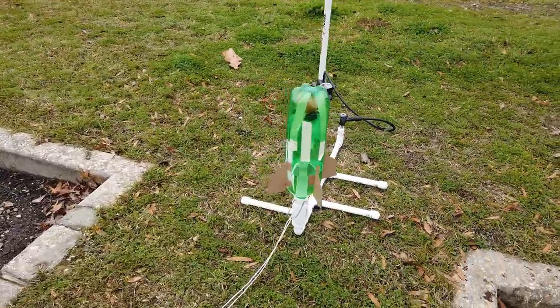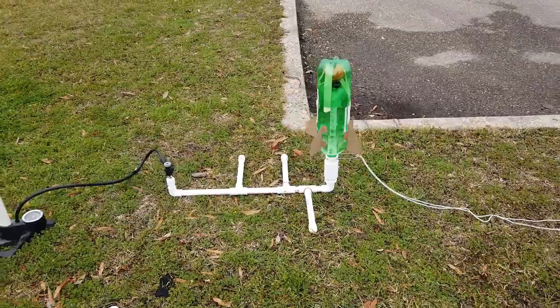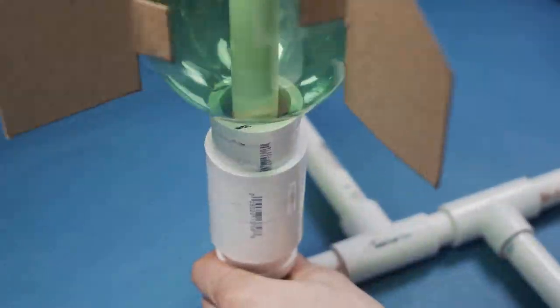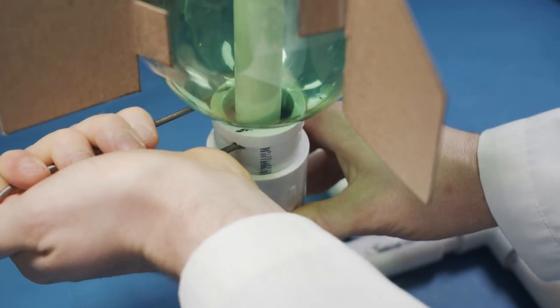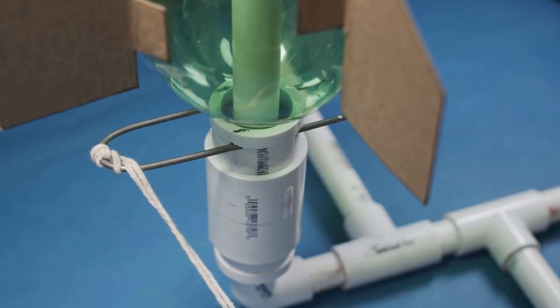Several pieces of PVC pipe act as the base. We use a bike pump connected to a tire valve to add air into the system. The firing pin holds the bottle in place while we pressurize the whole thing. When we're ready to launch, we just pull the pin and off it goes.